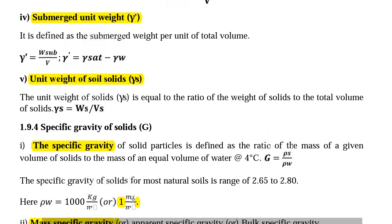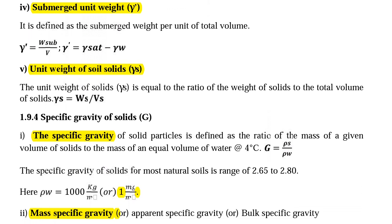Next we will see unit weight of soil solids gamma S. The unit weight of solids gamma S is equal to the ratio of weight of solids to the volume of solids. The formula is gamma S equal to Ws divided by Vs.